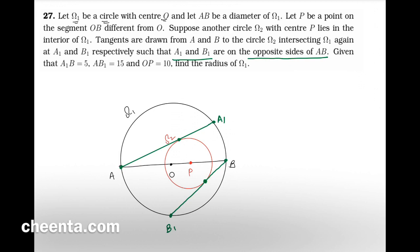The given information is: A1B = 5, AB1 = 15, and OP = 10. We want to find the radius of omega1. Pause the video and give this a try — it's not a very hard problem. There is a hint: similarity of triangles is all you need to solve this problem.